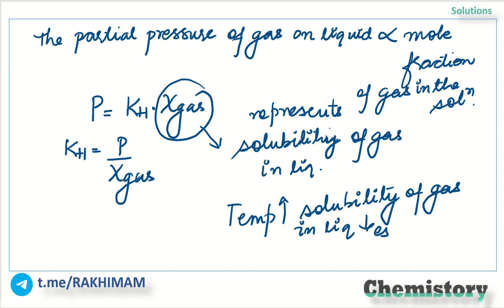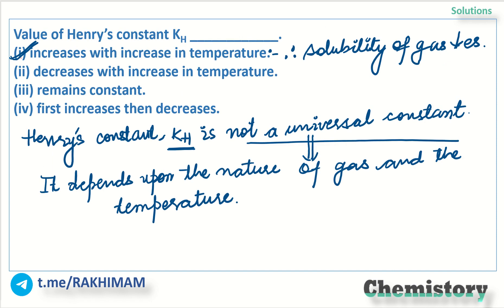So, if temperature increases, the solubility of gas in liquid decreases. Since solubility is represented by mole fraction, the mole fraction also decreases. If mole fraction decreases, Henry's constant increases. So with increase in temperature, Henry's constant KH increases. This is all interlinked. Therefore, the value of Henry's constant KH increases with increase in temperature — option number one is the right answer.